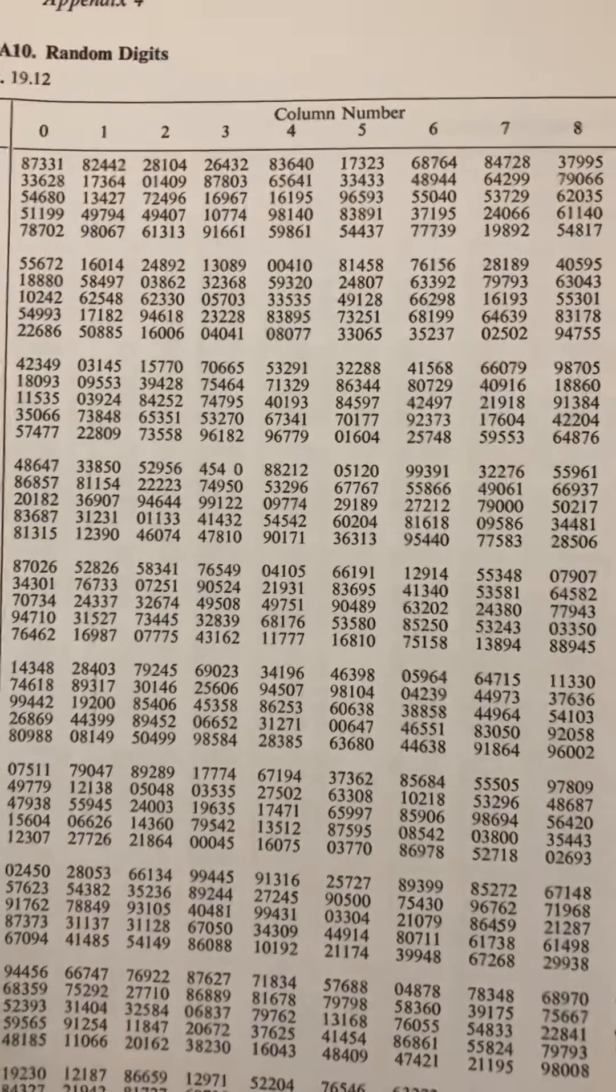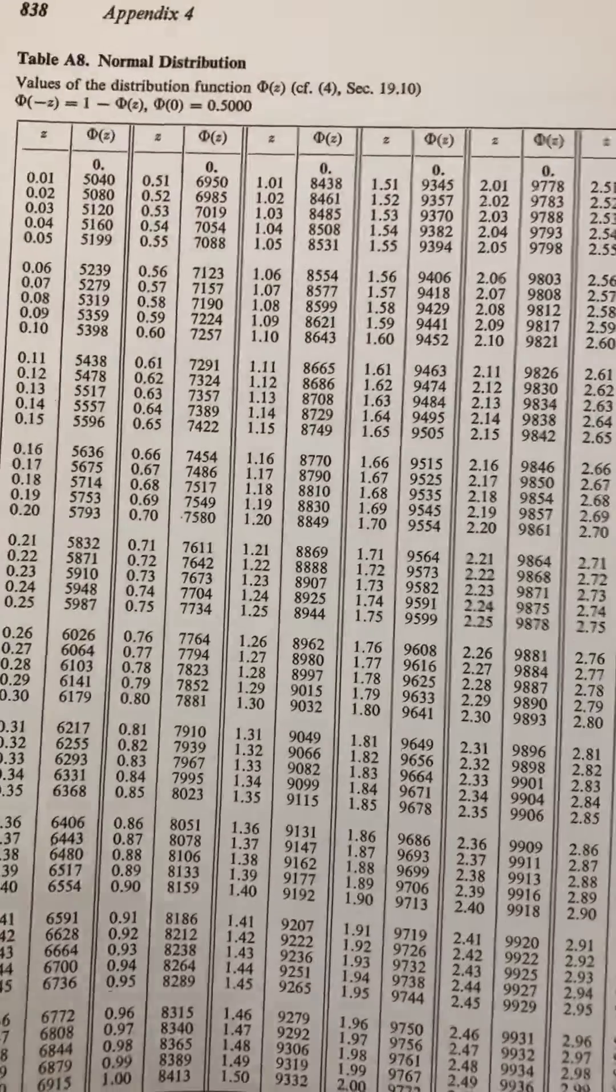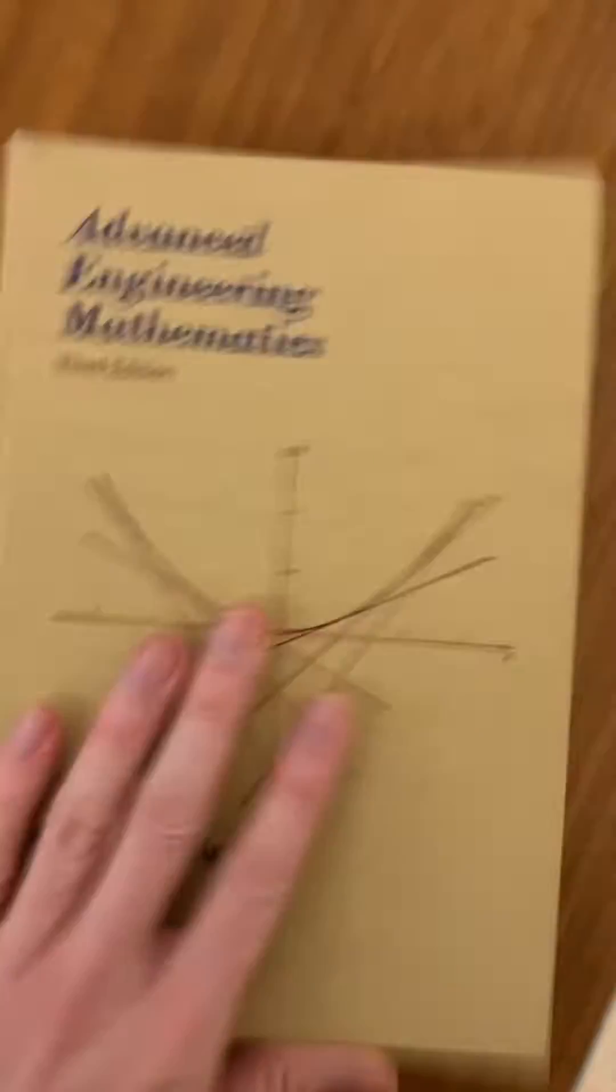They literally have a big list of random digits, dude. This is so crazy. Normal distribution. Well, that's pretty cool, man. I mean this is advanced stuff, dude.